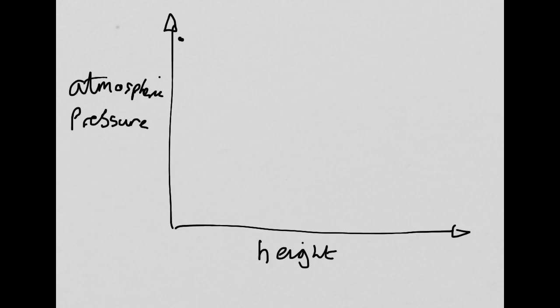So if you have a look at the graph of atmospheric pressure versus height, it starts off really high when you're really low down. So the atmospheric pressure is high, but then as you get higher and higher, the pressure goes down, but then it takes this curved shape.